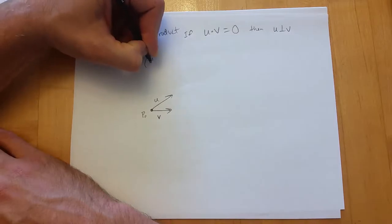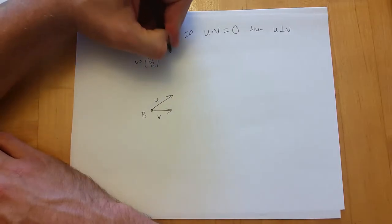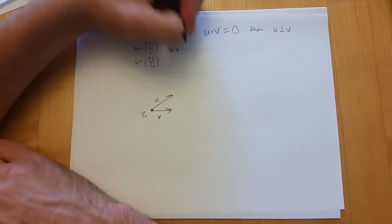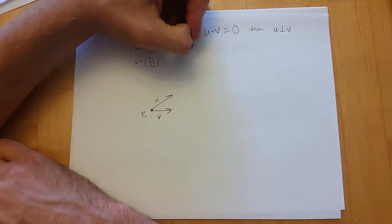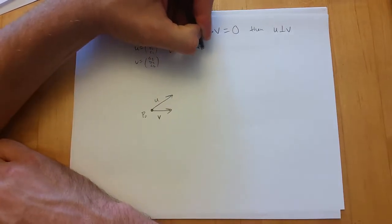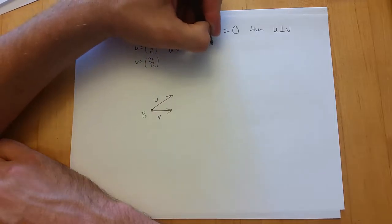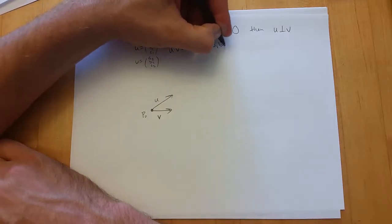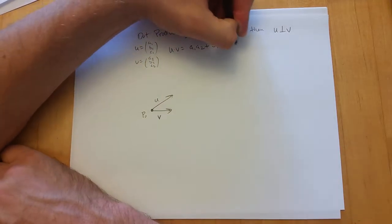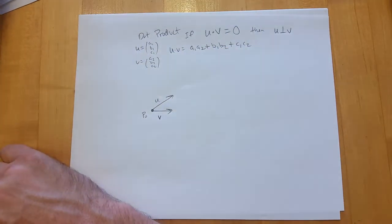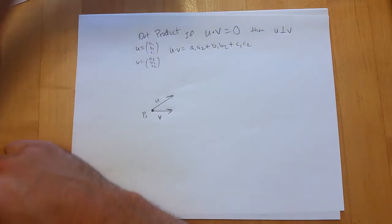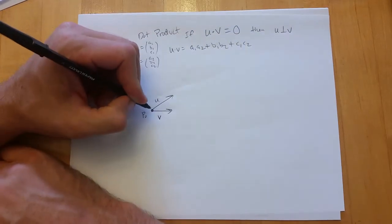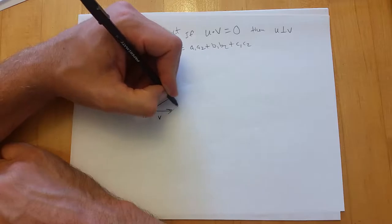For vectors u = ⟨a1, b1, c1⟩ and v = ⟨a2, b2, c2⟩, u dot v equals a1 times a2 plus b1 b2 plus c1 c2. It's going to be a number. It's very different from the cross product, which is not a number — it's another vector.